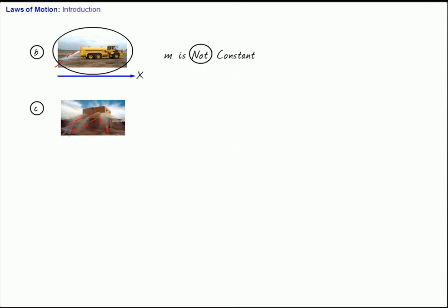One more example: a truck is moving and there is rain, so water is accumulating inside the truck. As a result, the mass is not constant — mass is variable. So you see, it is not that mass always has to be constant. I have given you a few examples where the mass is not constant.